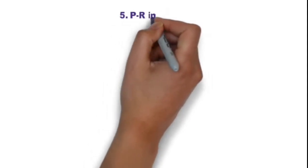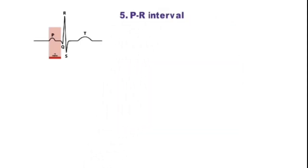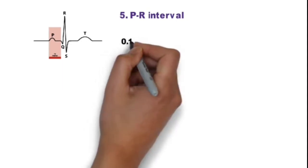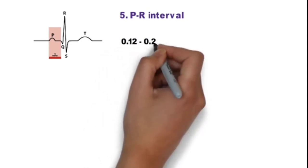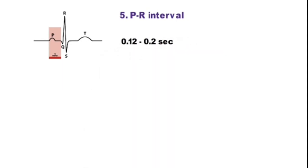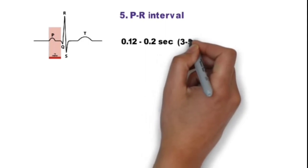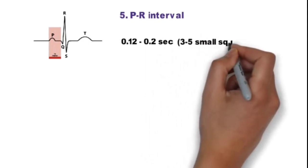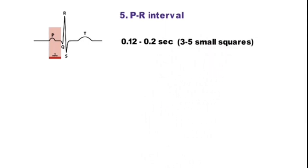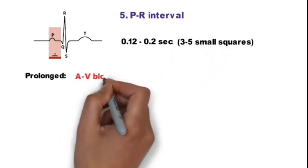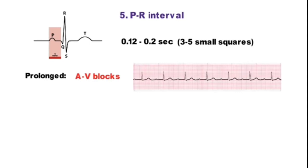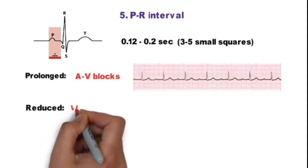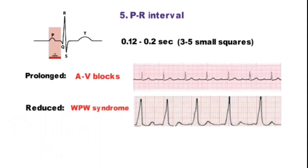Step 5 is PR interval, which is from the start of P wave to the start of Q wave. Normally it is 0.1 to 0.2 second or 3 to 5 small squares. It is prolonged in AV blocks and reduced in WPW syndrome. PR interval is depressed in pericarditis.